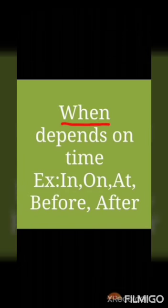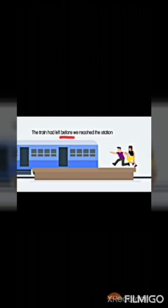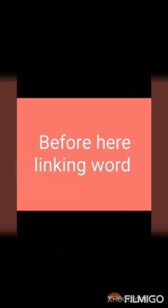When — preposition of time. Examples: in, on, at, before, after. Let's look at a sentence example. 'The train had left before we reached the station.' When did the train leave? Before we reached. So 'before' is the linking word here.